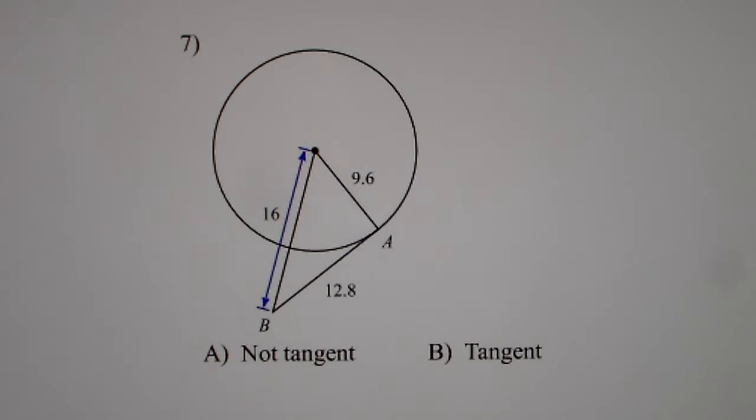Looking at number 7. Our goal is to have that to be the right angle. So 9.6 squared plus 12.8 squared equals 16 squared. So let's go parenthesis 9.6 squared plus parenthesis 12.8 squared gets you 256.